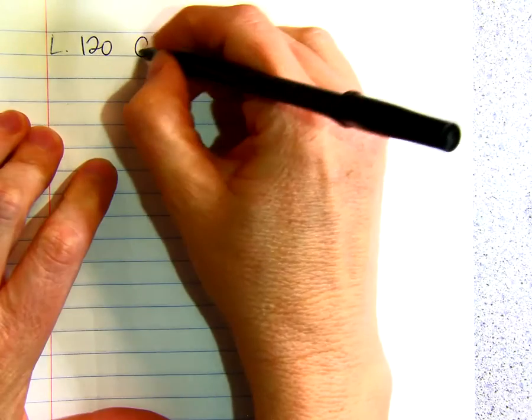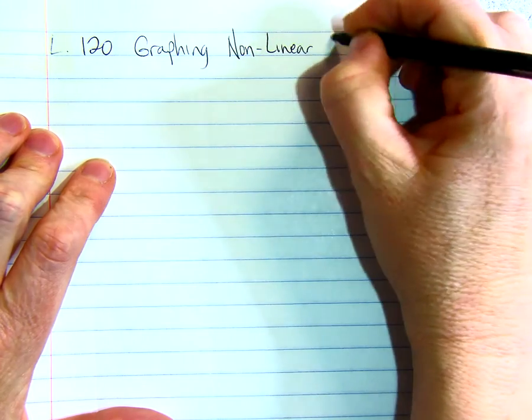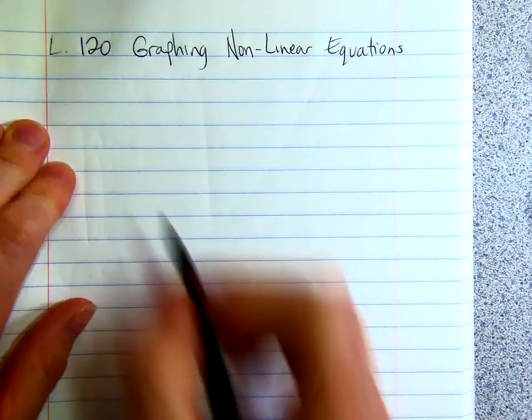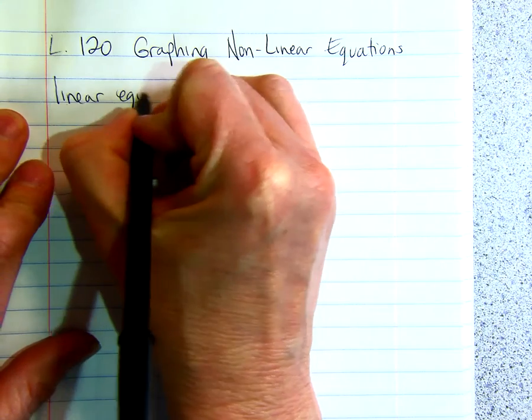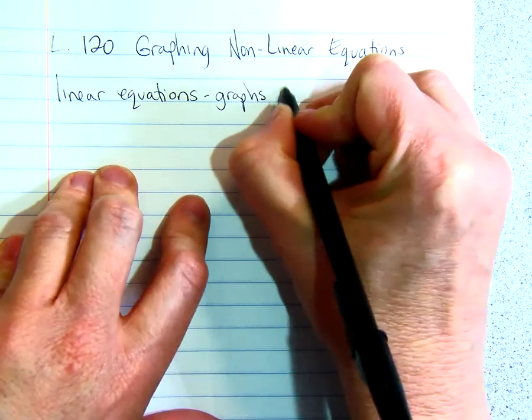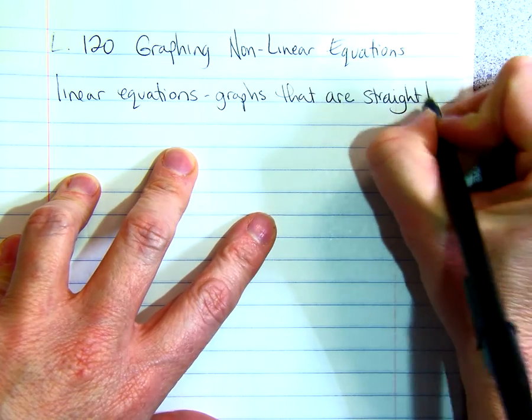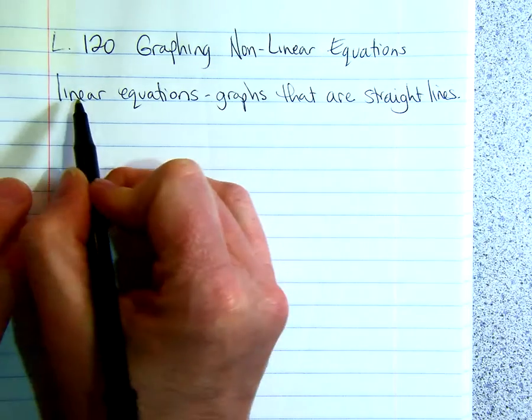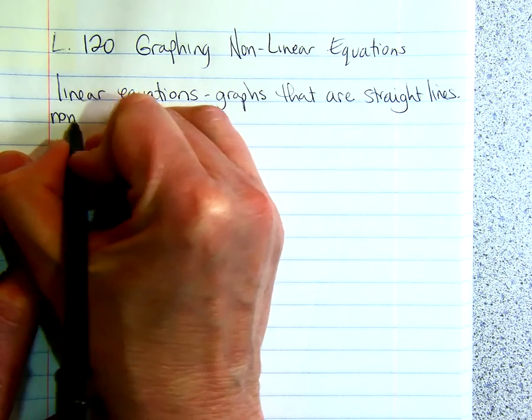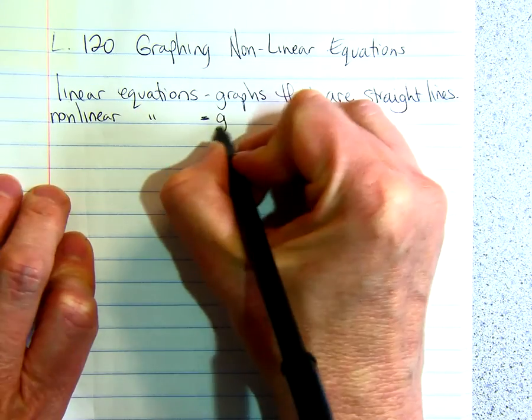Lesson 120, graphing non-linear equations. This is a lot like lesson 119. A linear equation is one that generates a straight line. These are graphs that are straight lines - those are linear. If you look at the word linear, you can see 'line' in the first four letters. A non-linear equation is just what it sounds like - graphs that are not straight lines.